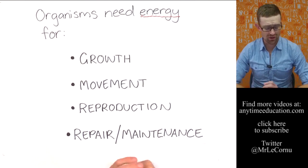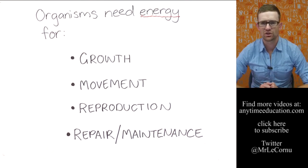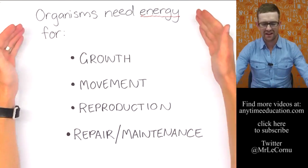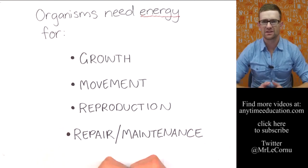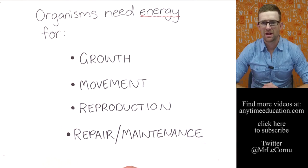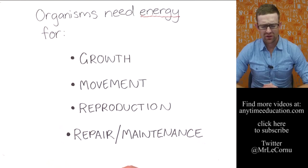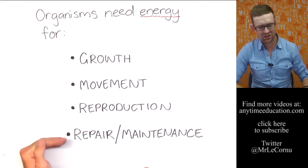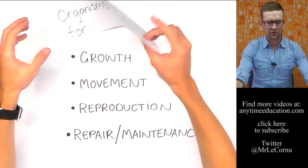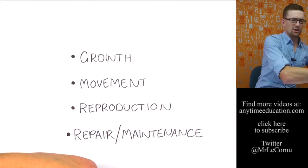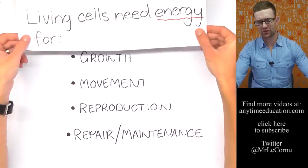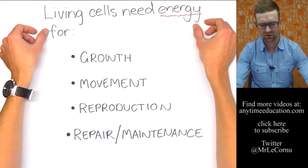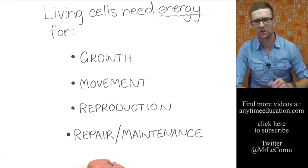So I'm sure you would agree that those four things there are essential for a living thing. And therefore, because energy is needed for those four things, energy is essential to maintain life for any organism. So the next thing that we can look at is, well, if organisms need energy for those four things, what do their building blocks need? The building blocks for living things are cells. What do living cells need energy for?